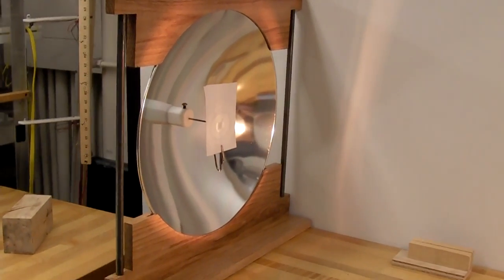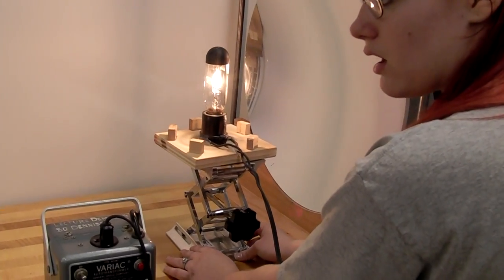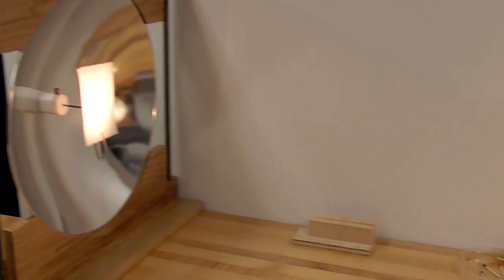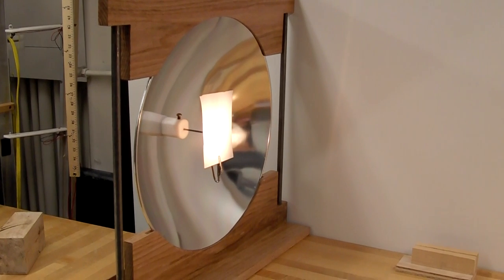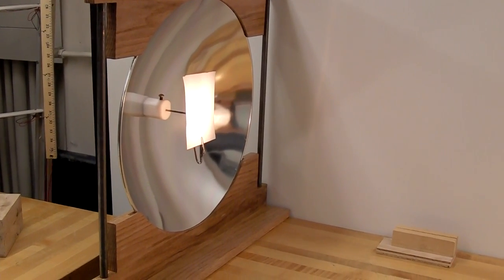The next step is to get the height of the light correct so that it is in the center of the mirror. So I move this up and down until I find that position.